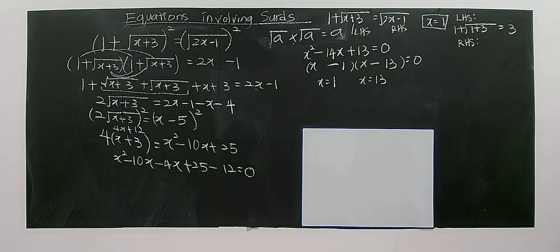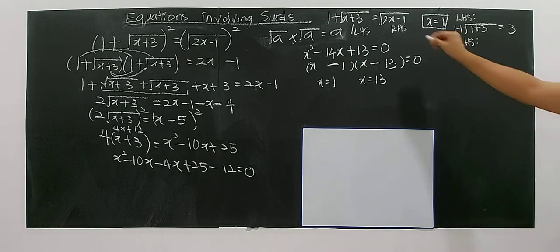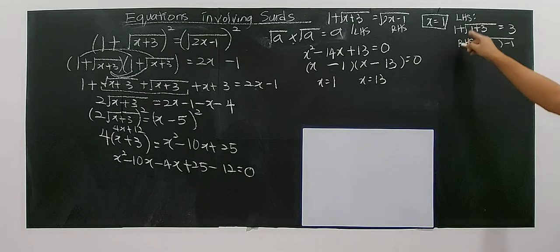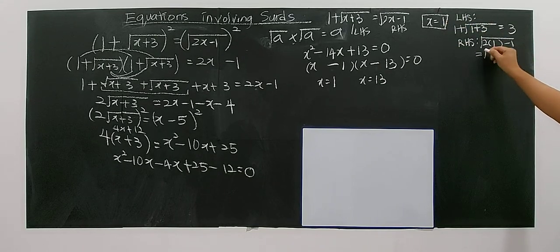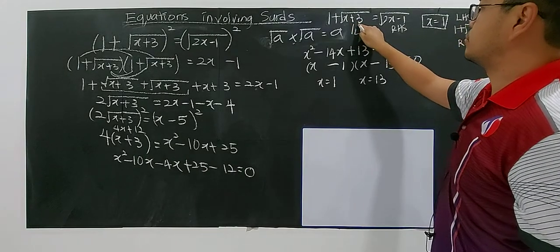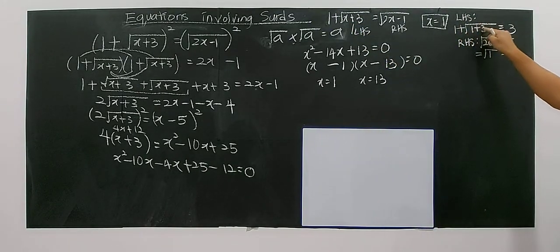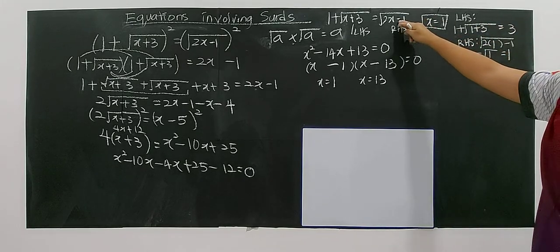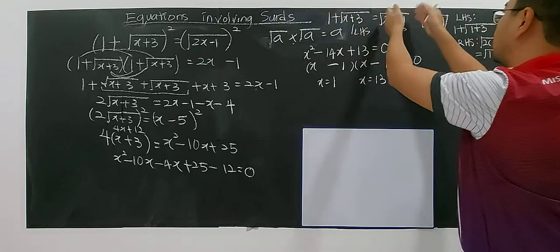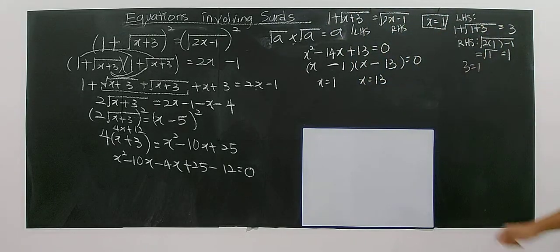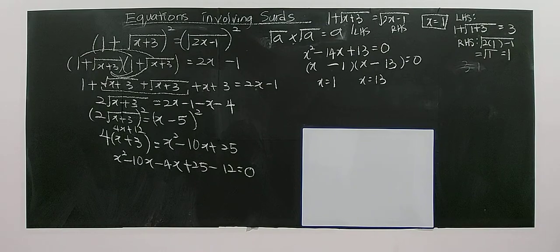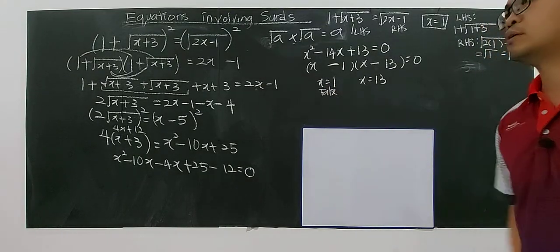For the right hand side: square root of 2x minus 1. Substitute x equals 1: square root of 2 times 1 minus 1 equals square root of 1 equals 1. So left hand side gives 3 but right hand side gives 1. Can you say 3 equals 1? No. So this solution does not satisfy the equation — it is a false solution.